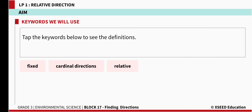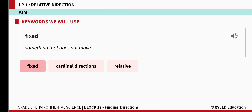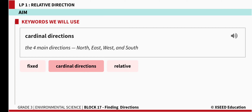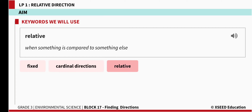The keywords we will use are: first, 'fixed,' which means something that does not move. Second, 'cardinal' — C-A-R-D-I-N-A-L — cardinal directions means these are the four main directions like north, east, west, and south. Next word is 'relative' — R-E-L-A-T-I-V-E — relative means when something is compared to something else.